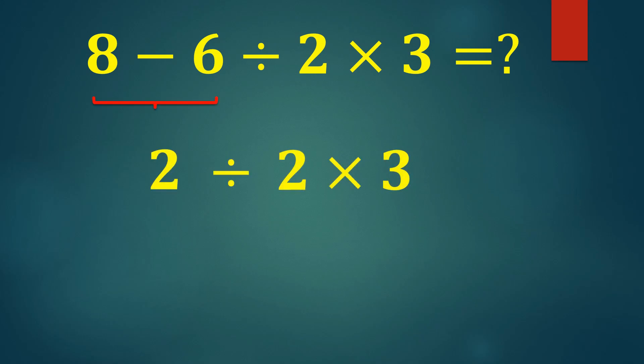Now we have 2 divided by 2 times 3. Let's divide first, 2 divided by 2 equals 1. Then we multiply, 1 times 3 equals 3.